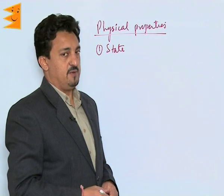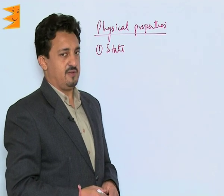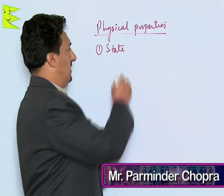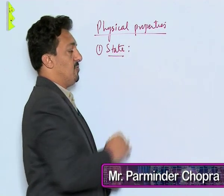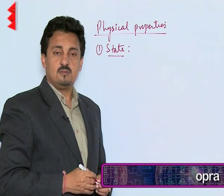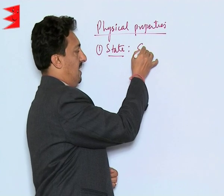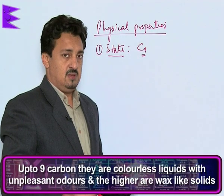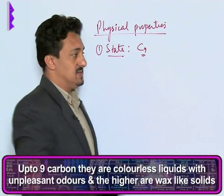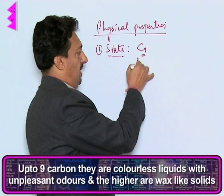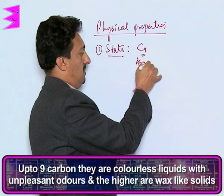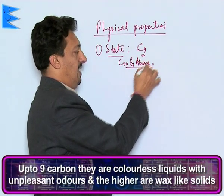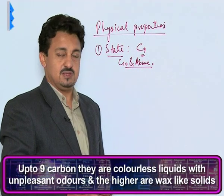Let us see the physical properties of carboxylic acids. First is the state: carboxylic acids up to carbon number 9 (up to C9) are all colorless liquids, whereas above C10 they are all colorless waxy solids.